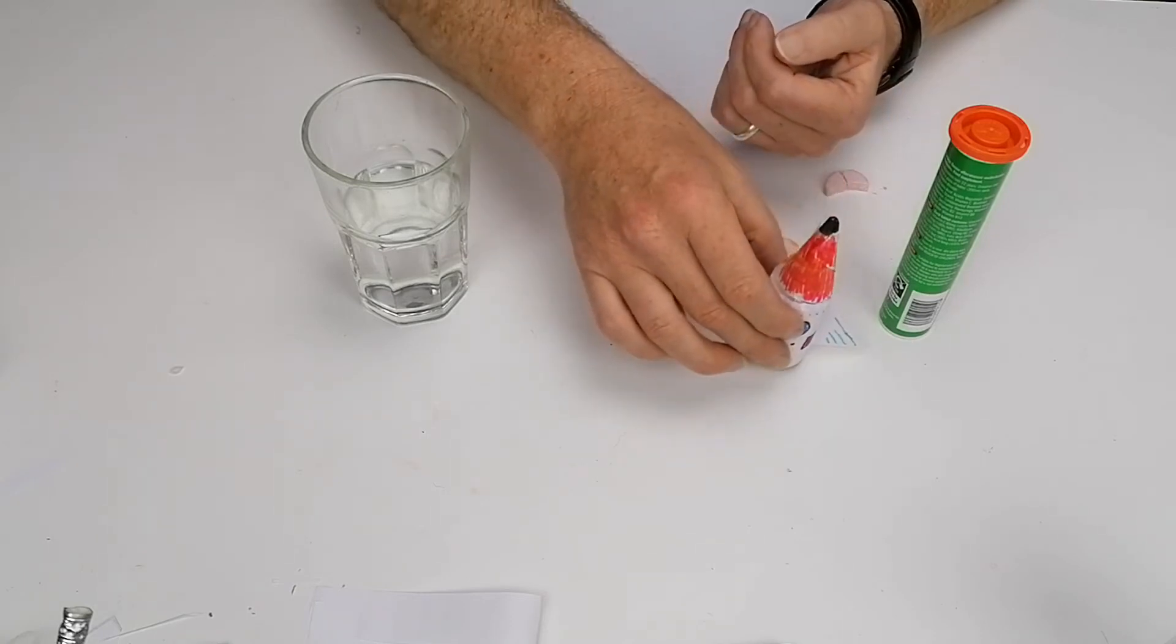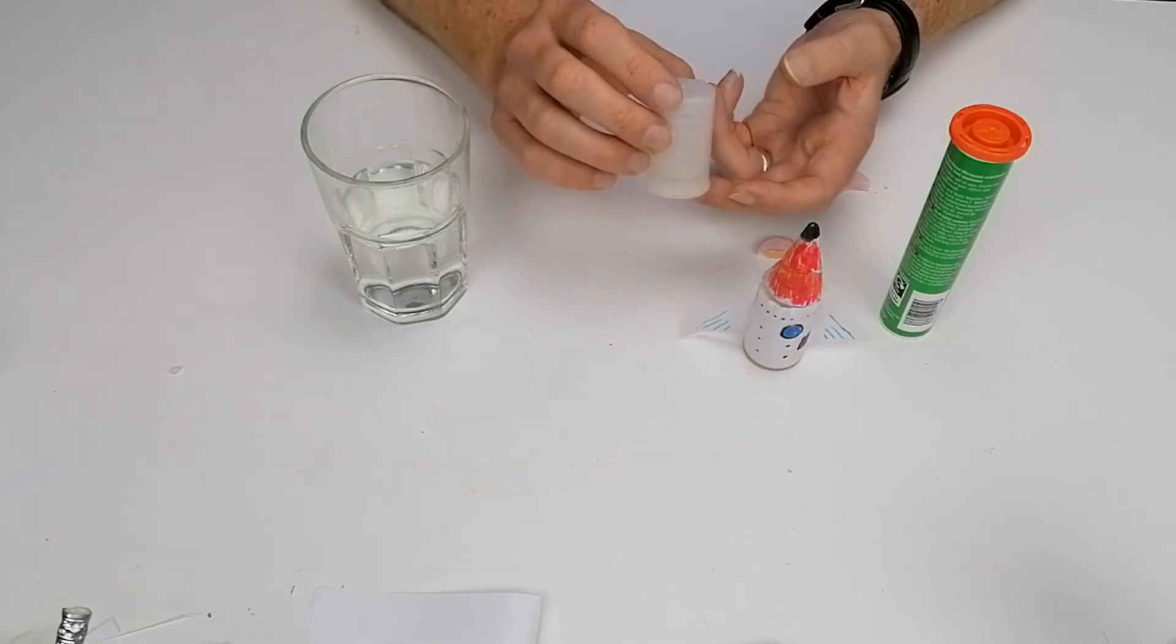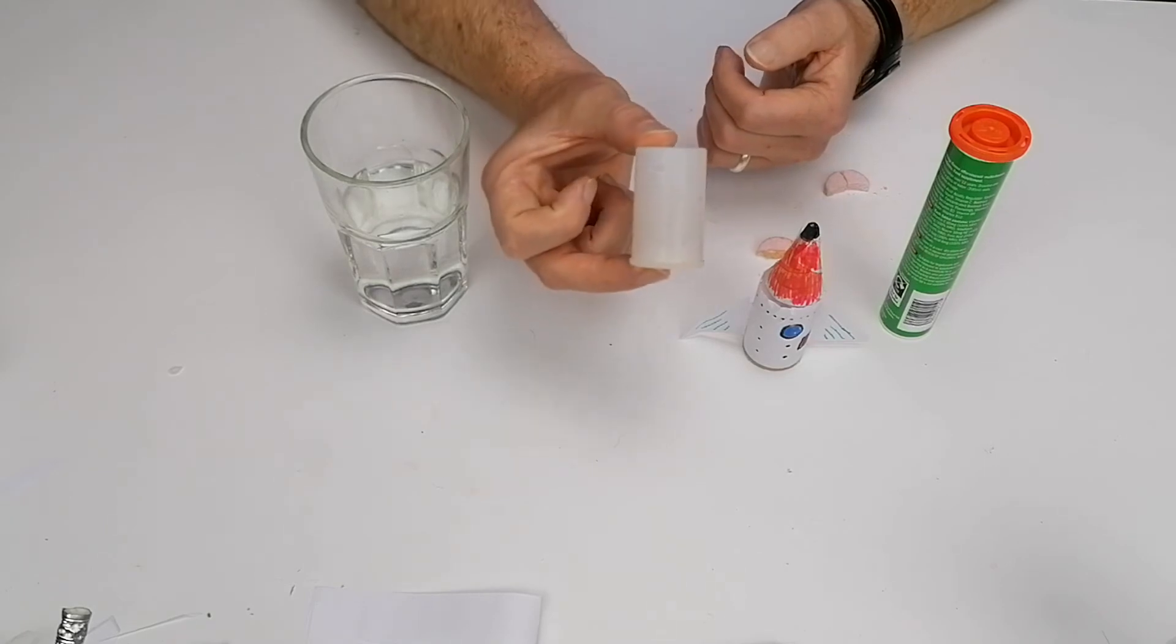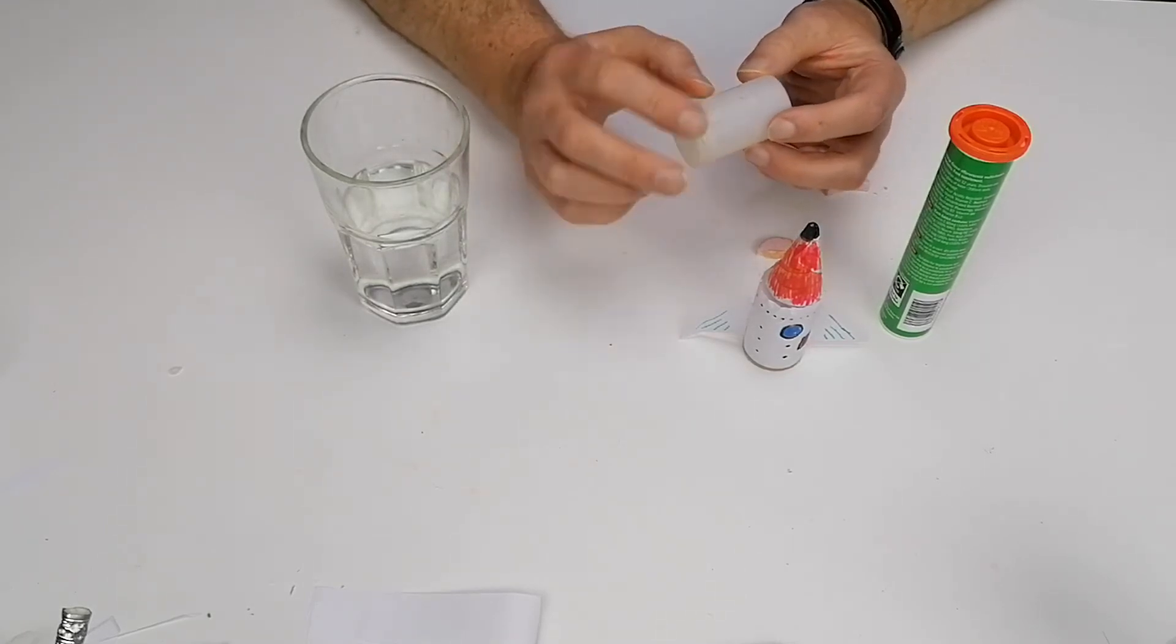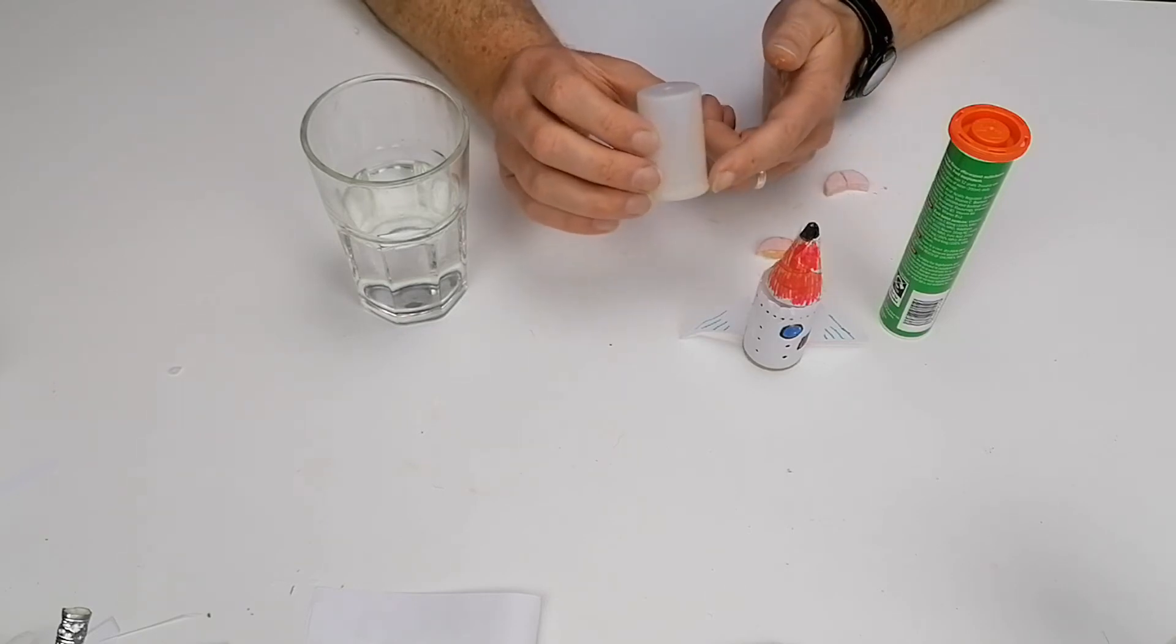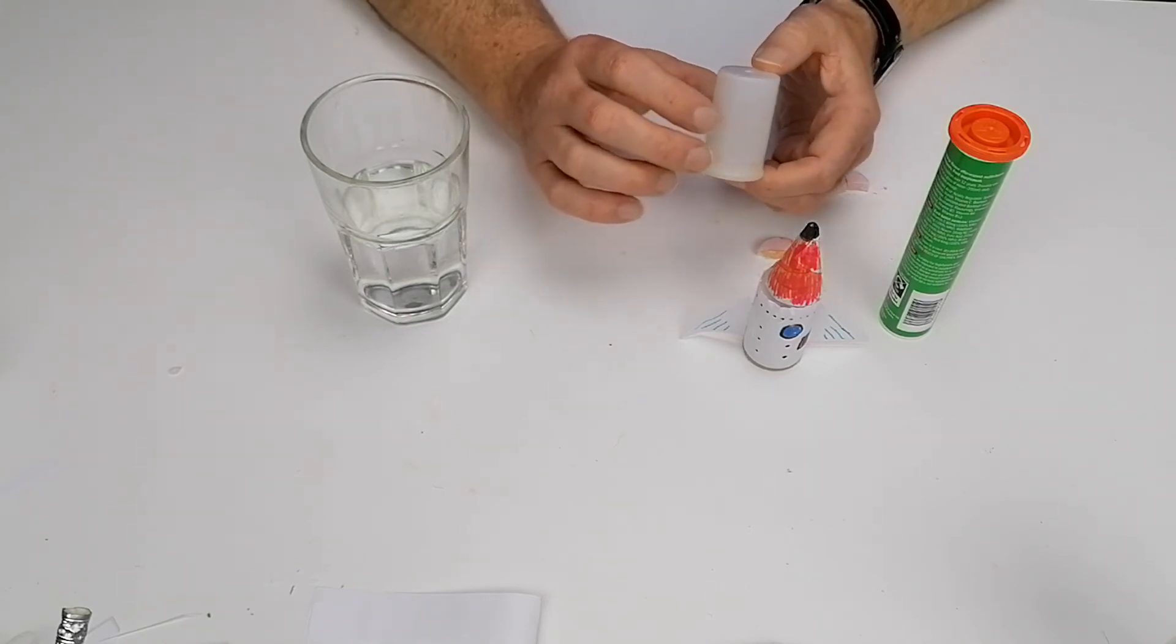The other thing is when you're getting the film canisters, make sure it's actually the clear ones, not the black ones. There are black ones with gray lids and they haven't a very good seal and they don't work very well.